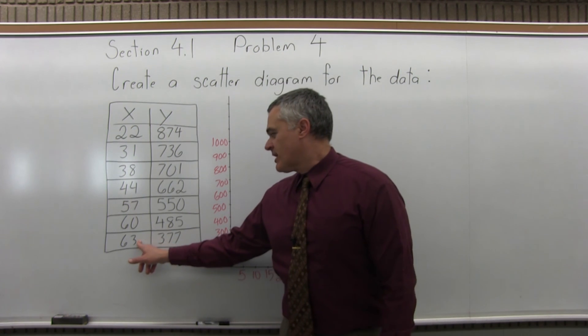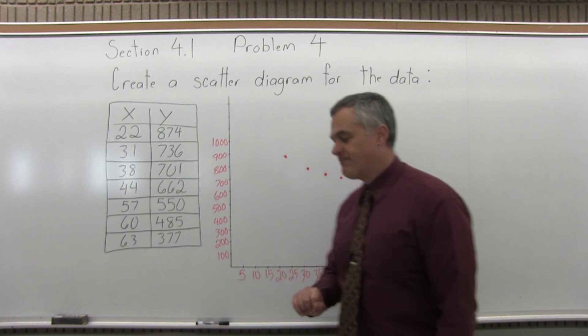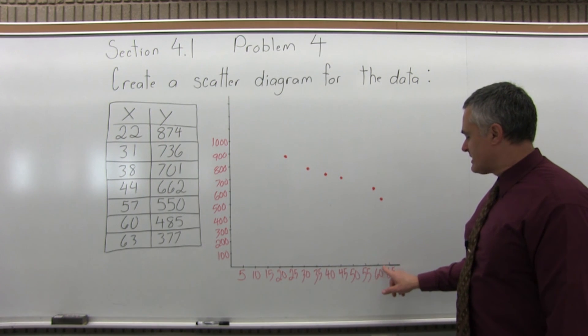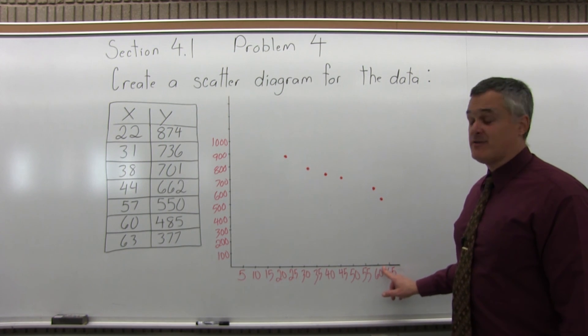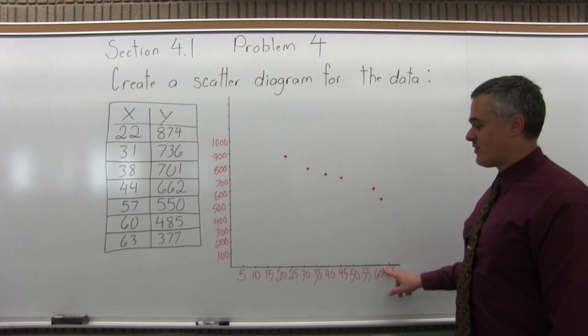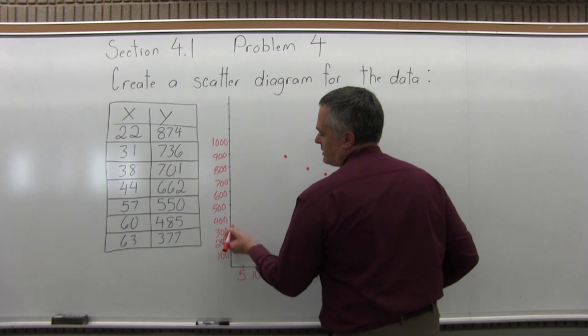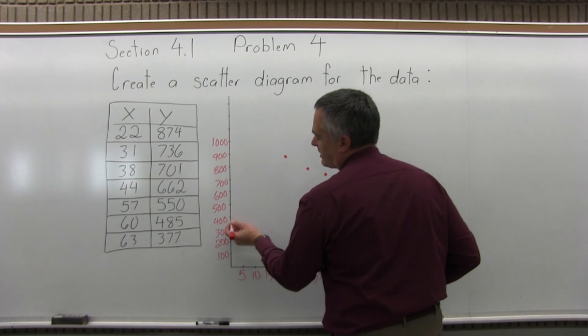And finally, one more dot to put on the graph. Over 63 for X and up 377. So 63 for X, again, 62.5 is right between 60 and 65. So 63, tiny bit further over. And up 377 for the height. So 3 quarters of the way up between 300 and 400 is 375. 377, 375, about the same height.